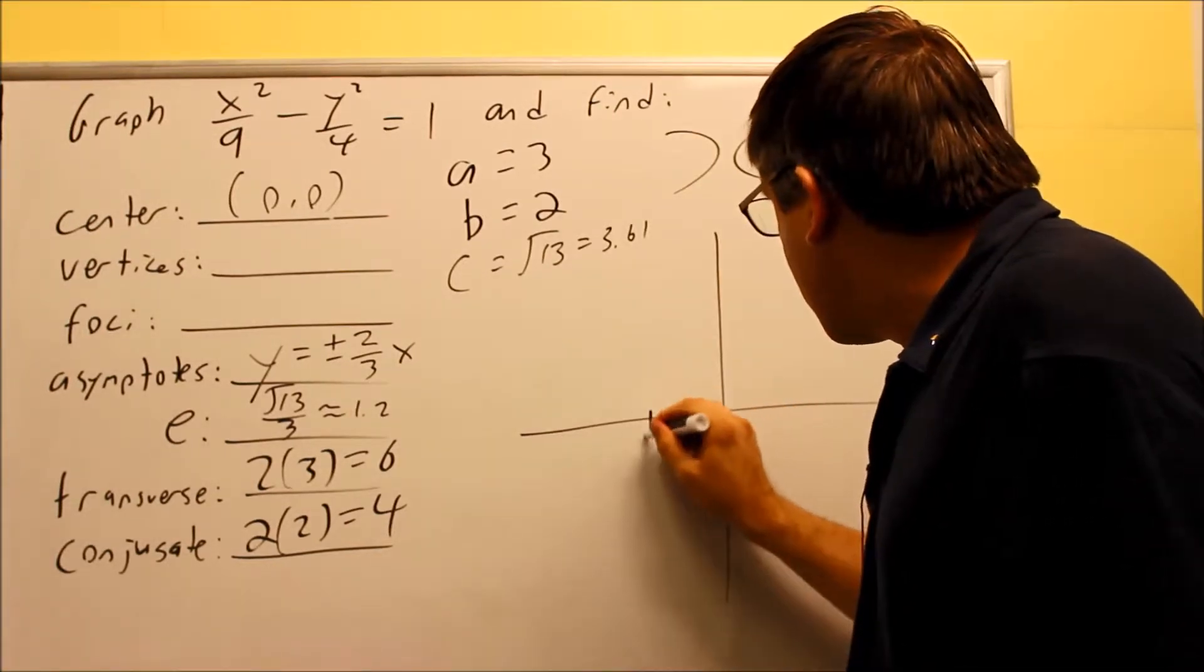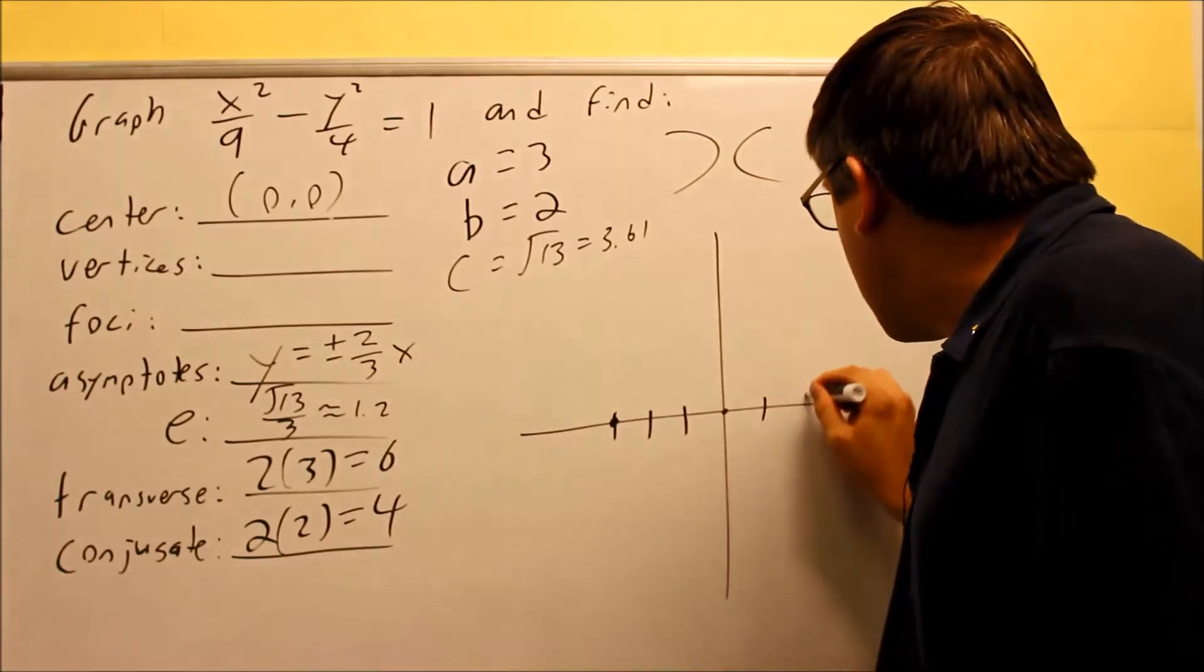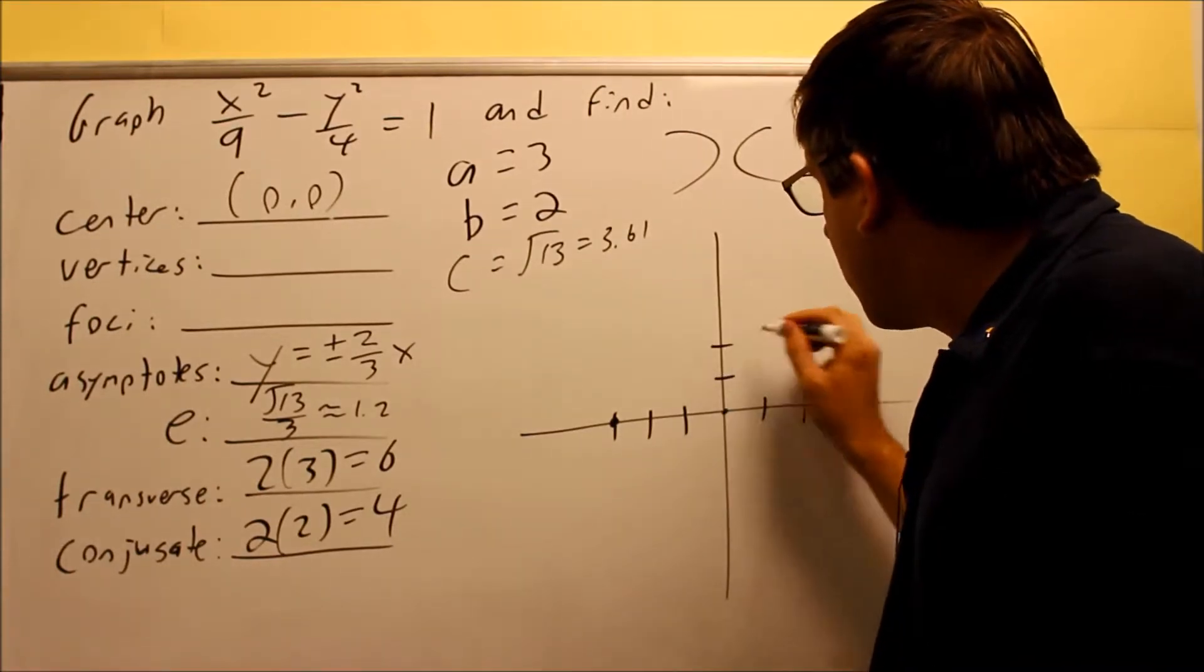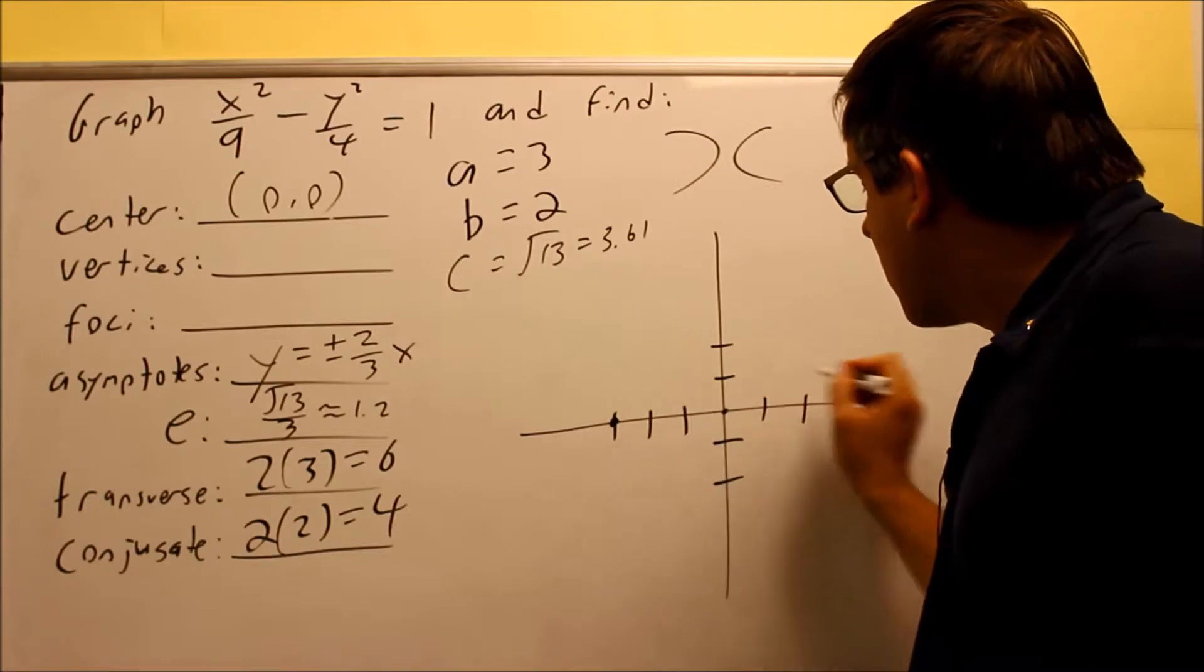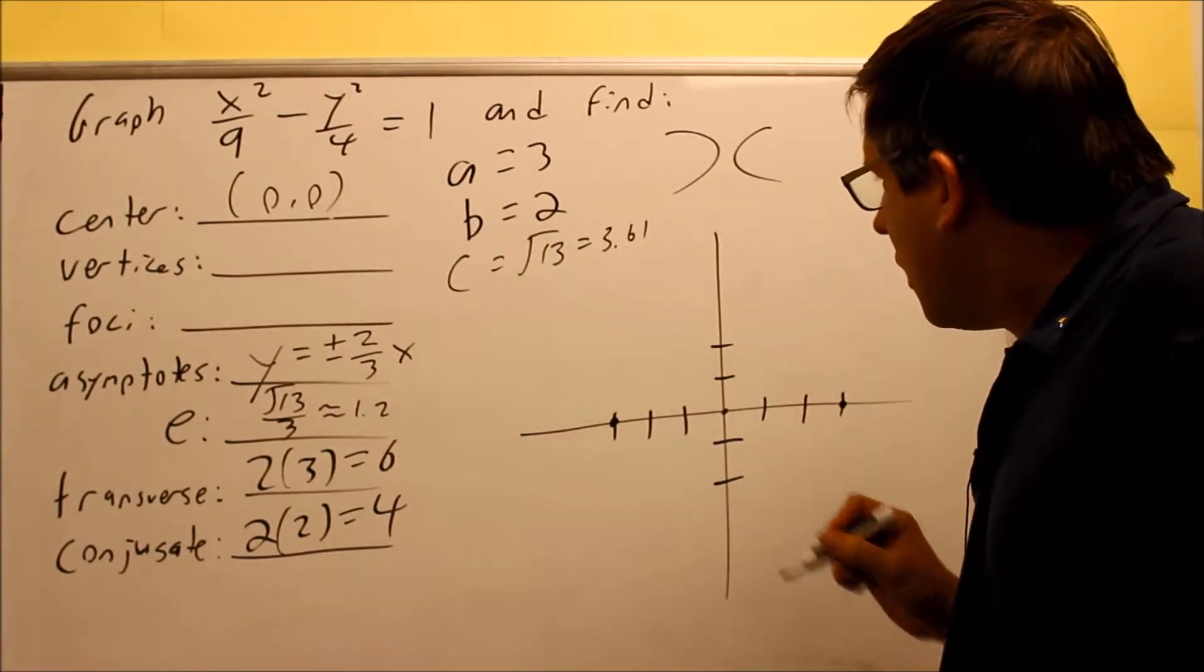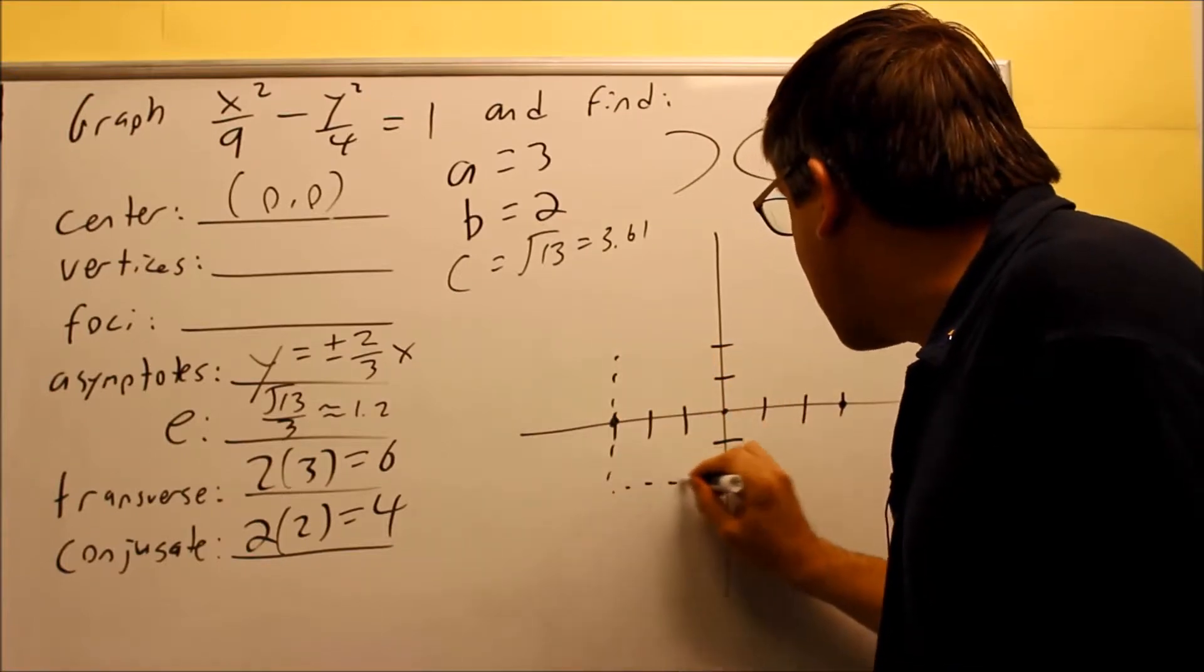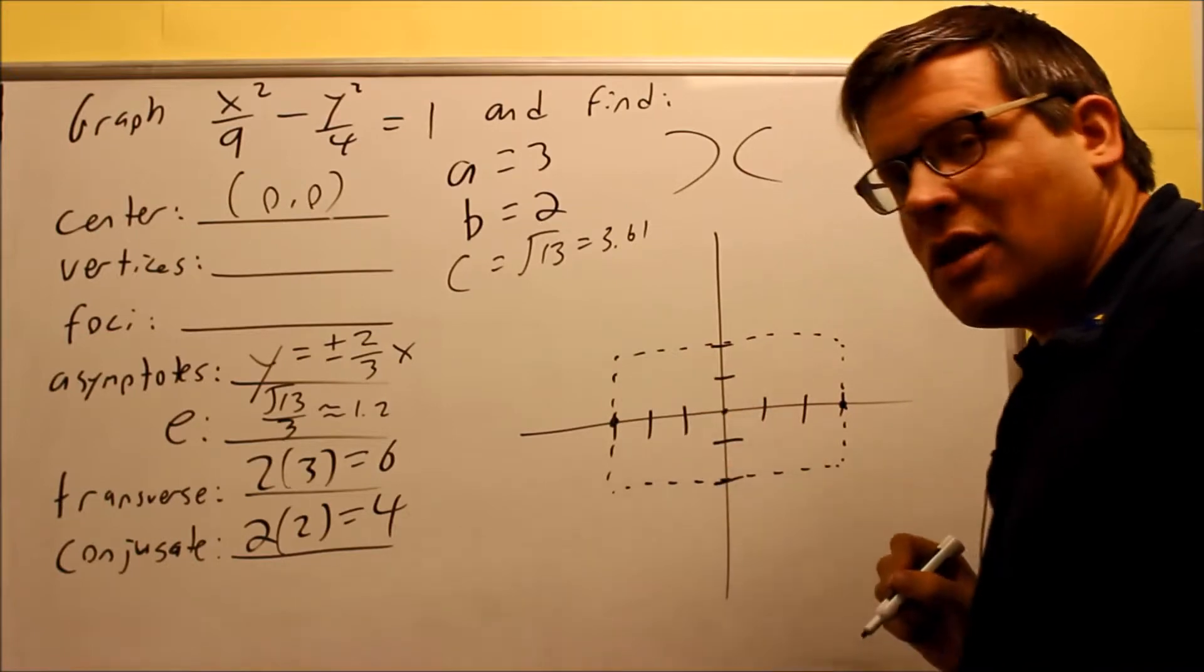Because it opens up left and right, you're going to have an a inside each of the parenthesis parts there. The a is three, we're going to go three places to the left to make a dot, we're going to go three places to the right. Your b value is two, we're going to go up two and we're going to go down two. All these are measured from the center at zero zero.